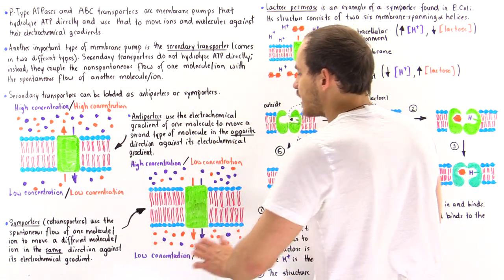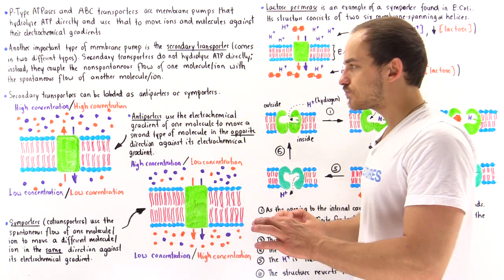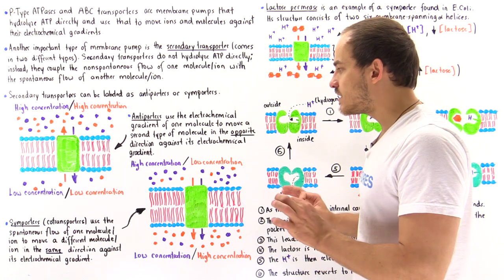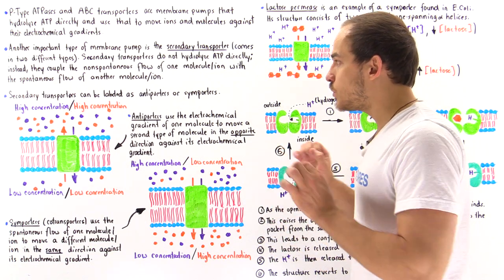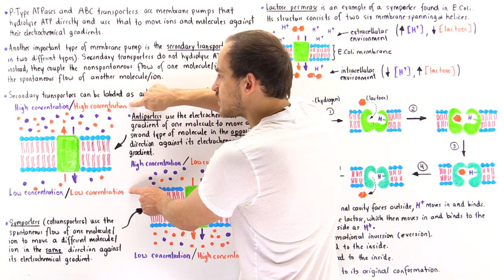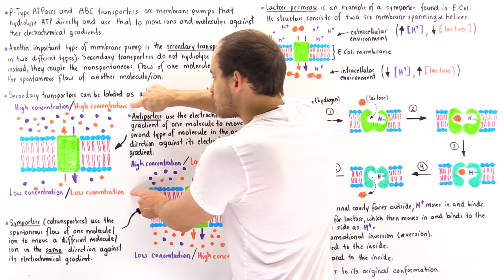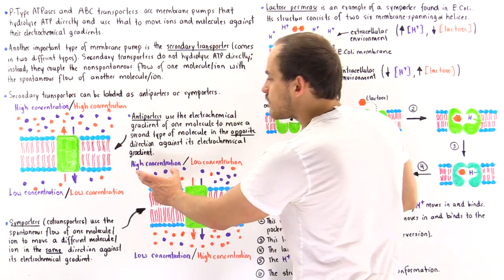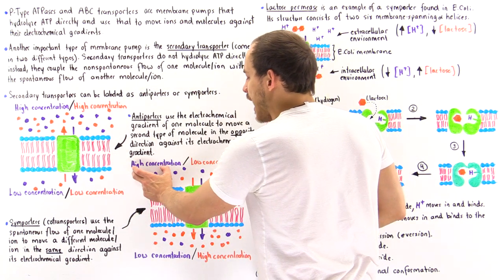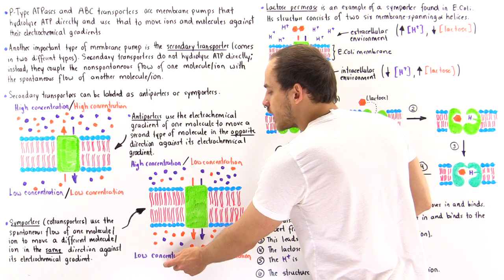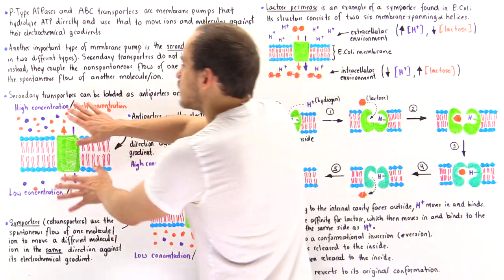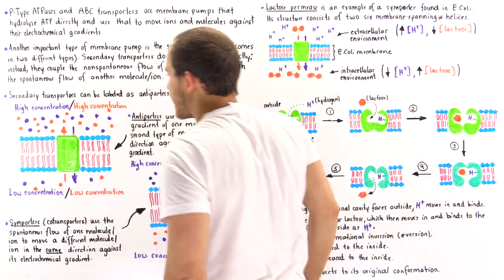We have our membrane and our symporter — the outside and the inside of the cell. We have a high concentration of purple molecules outside and a low concentration of purple on the inside, as in this particular case.